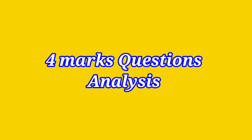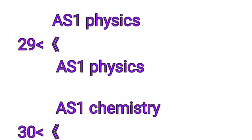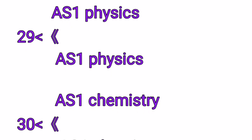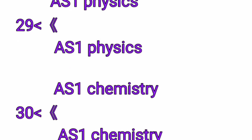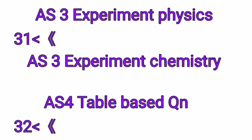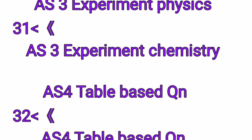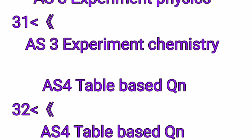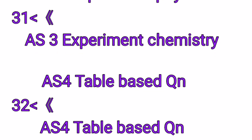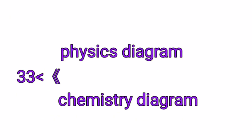Now, we analyze 4 marks questions. 29th question coming from AS1 physics and also AS1 chemistry. 31st question coming from AS3 physics experiment and second one is chemistry experiment. 32nd question is coming from AS4 table-based question either physics or chemistry. Finally, 33rd question is one is physics diagram and another is chemistry diagram.